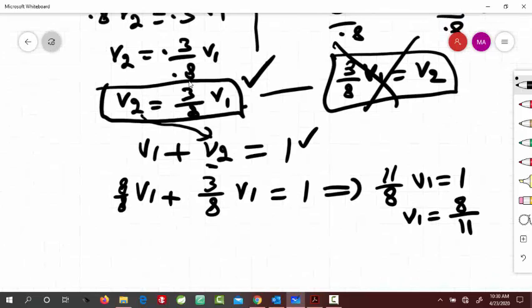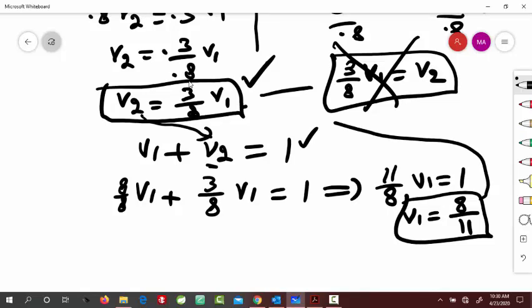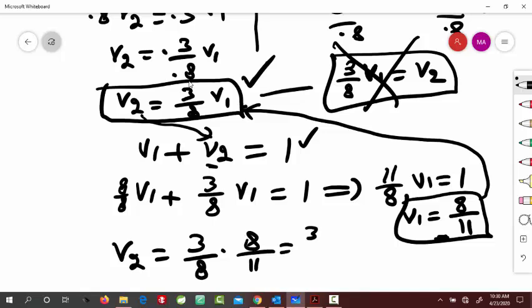And, similarly, so, this is my v1 value, and then, I can plug in here, right? So, this value plug in here, and this gave me v2. So, now, v2 would be 3 8th of v1, so, v1 I replace with its value, 8 by 11, so, that's equal to 3 by 11.